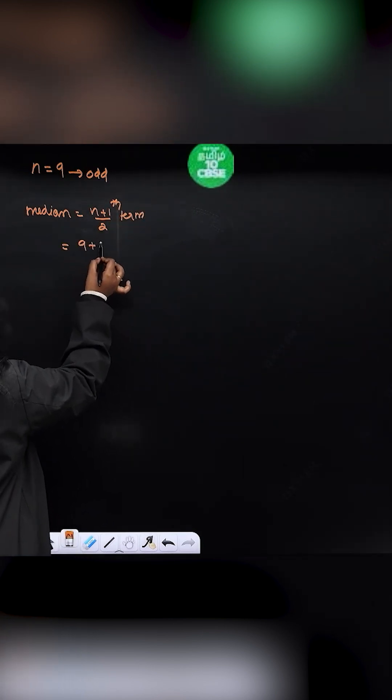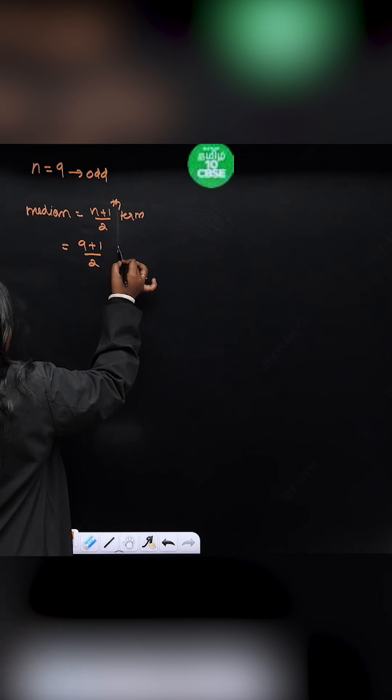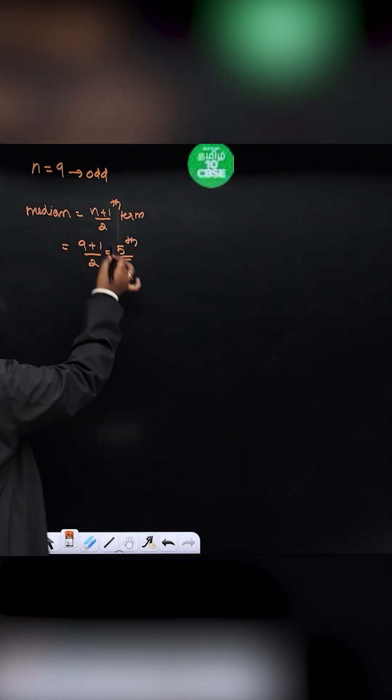So that will be equal to 9 plus 1 by 2, that is equal to 5th term. Okay, 5th term is the median.